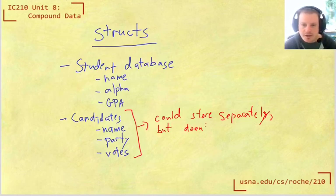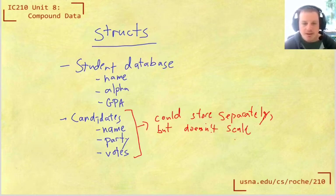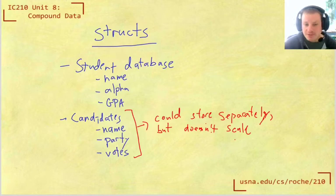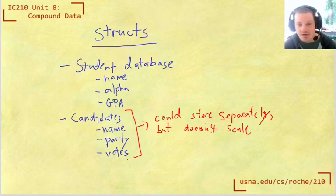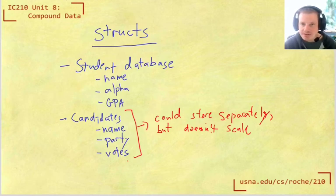And what I mean by it doesn't scale very well, is that if we wanted to have more and more candidates, then we would have to create just like more and more variables, and then you might start to think about having an array. But how can you put all these things together in an array? So you could have a separate array of all the names, and a separate array of all the party affiliations, and a separate array of all the votes. But now you have more than one array, but they're kind of, they all have to have the same size, and there's some lining up issues, and it just gets kind of awkward.